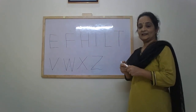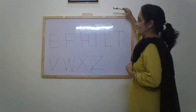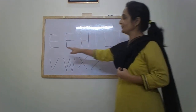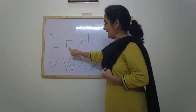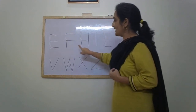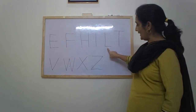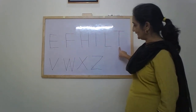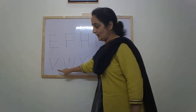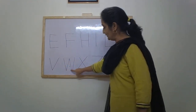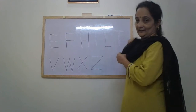So these are the letters that we have learnt so far: E, F, H, I, L, T, V, W, X, and Z.